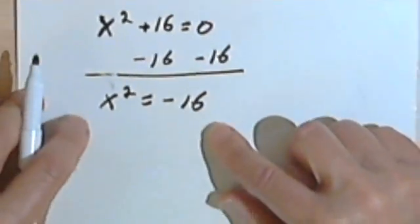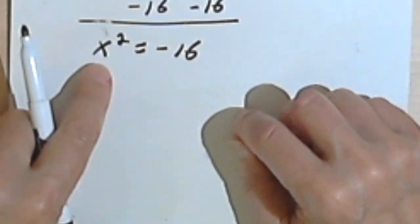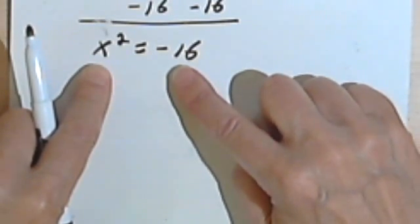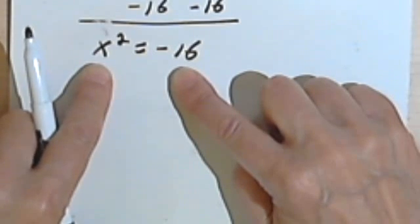Let's stop and look at this. This is saying that I've got some number, which we're calling x, we're squaring it and ending up with a negative 16. Well, this is impossible.